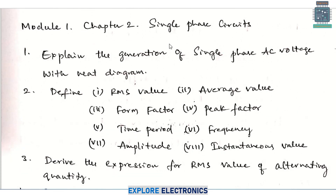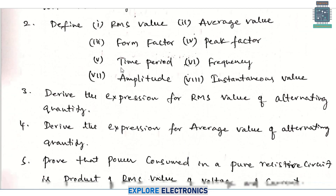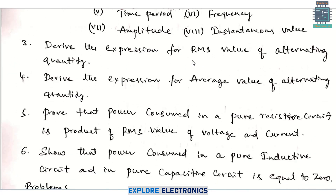Coming to chapter 2 in module 1, that is single phase circuits. The first important topic is generation of single phase AC voltage with a neat diagram — the diagram carries maximum marks, and then you need to explain how AC voltage is generated. Coming to definition-type questions, these are the different parameters they may ask: what is RMS value of AC quantity, what is average value, peak factor, frequency, amplitude, and so on. These definition questions are not the most important in this chapter since there are many other important questions.